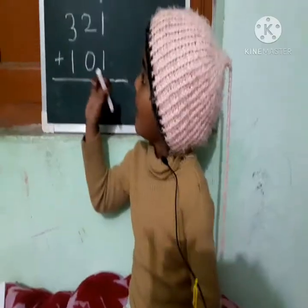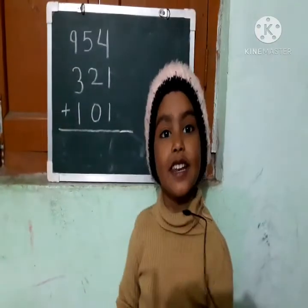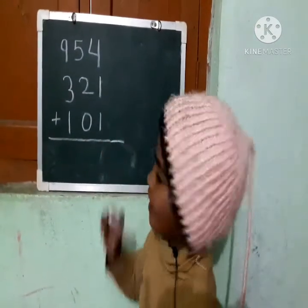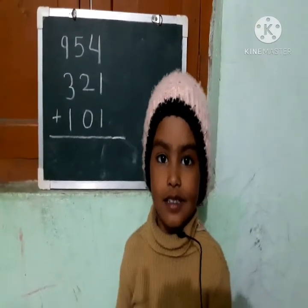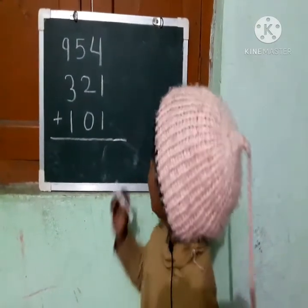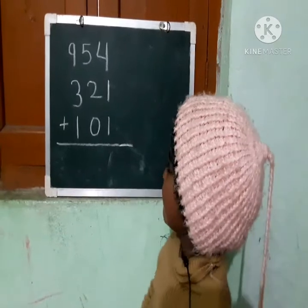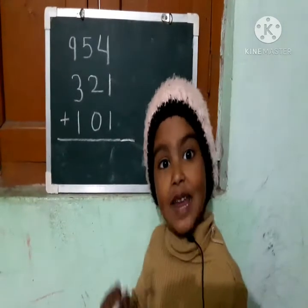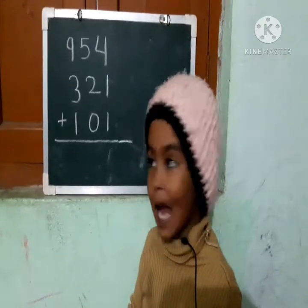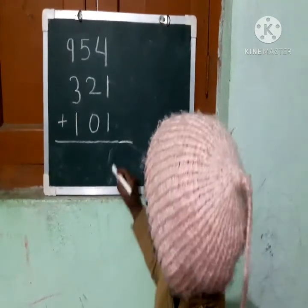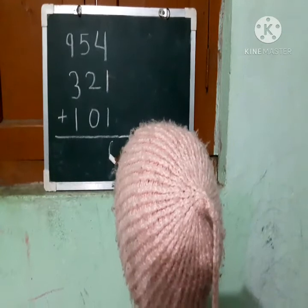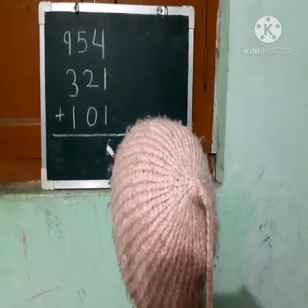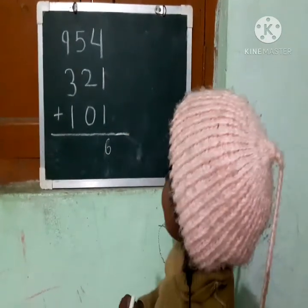Next. Edison. Can we start? Yes, sir. 4 plus 1 is 5. 5 plus 1 is 6. Answer: 6.